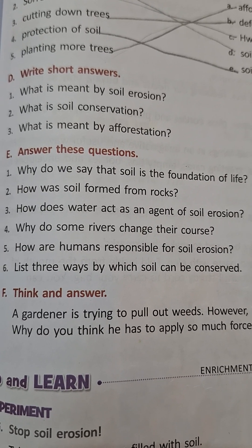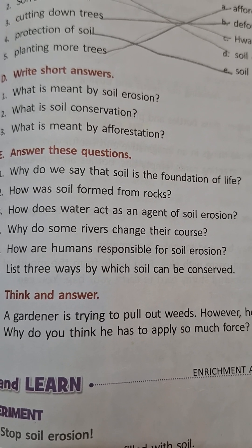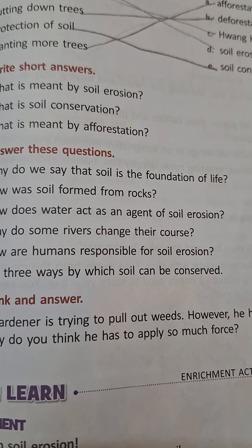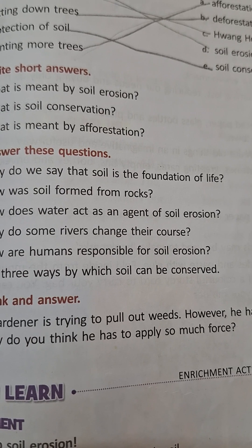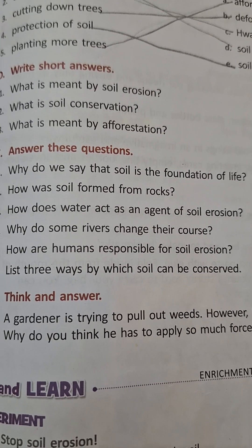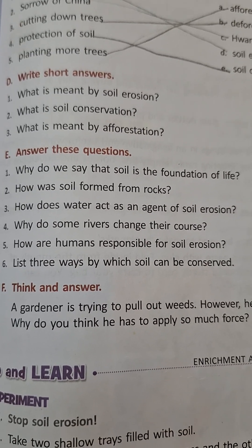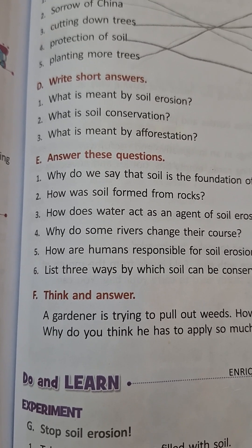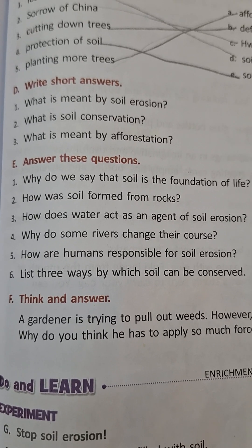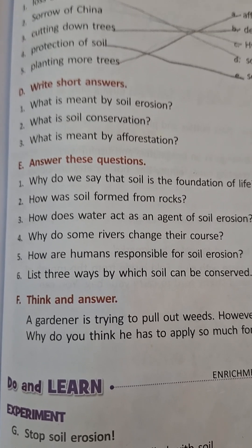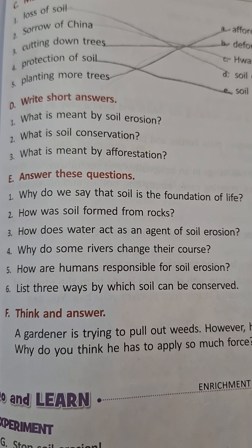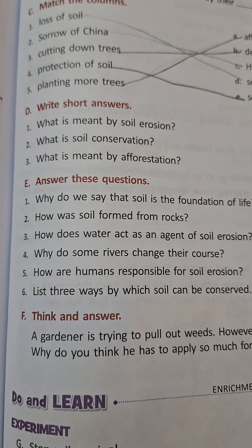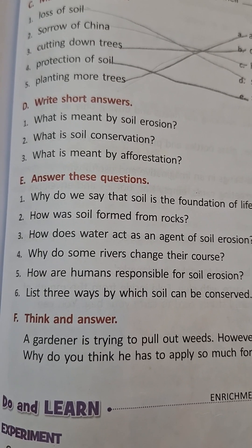Why do some rivers change their course? A river coming down the hill carries a lot of soil with it. Upon reaching the plains, the flow of the river slows down and it leaves part of the soil along its way. Over a period of time, soil accumulates and creates a barrier, making the river change its course very often.